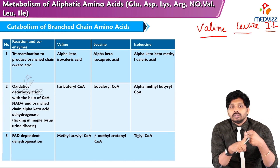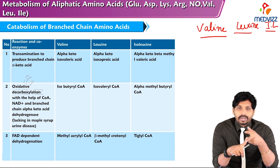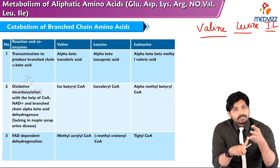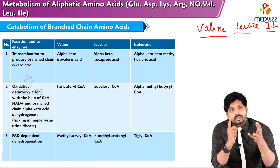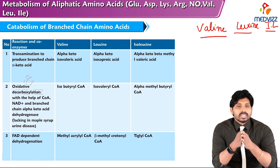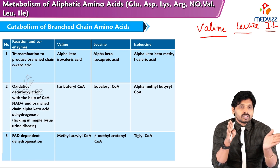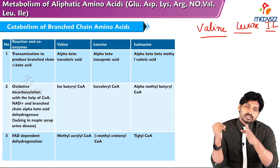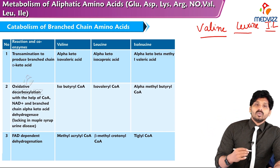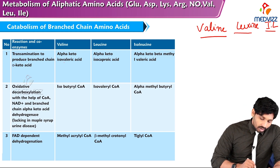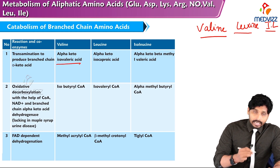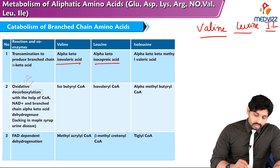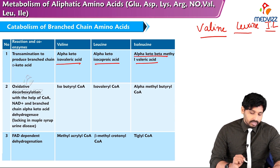Valine, leucine, and isoleucine all undergo transamination in the first step, and all three also undergo decarboxylation in the second step and dehydrogenation in the third step. In the first step, valine is converted to alpha-keto isovaleric acid, leucine to alpha-keto isocaproic acid, and isoleucine to alpha-keto beta-methyl valeric acid.